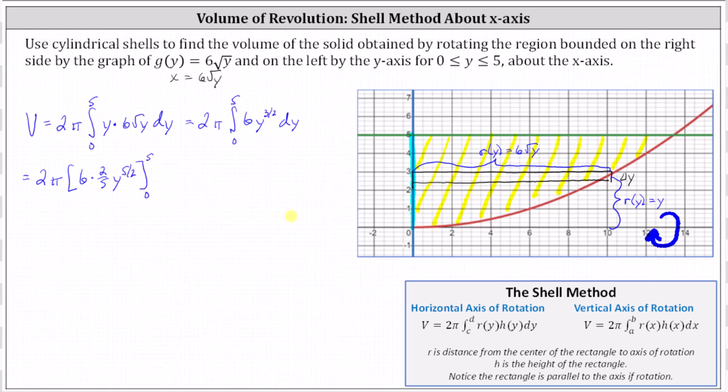Let's simplify the antiderivative. We have 12/5 y to the 5/2. Let's go ahead and factor out the 12/5 and multiply it by 2π. It gives us 24π/5.